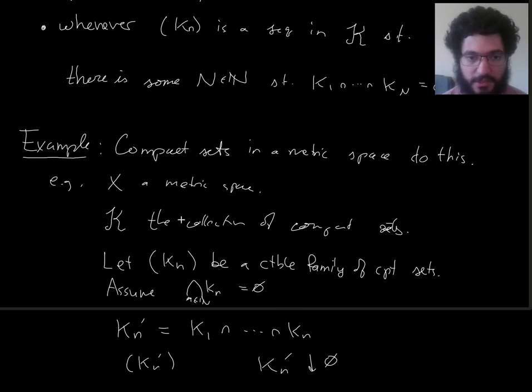It suffices to show that at least one of the kn primes is the empty set. So the question, is this a compact class, becomes equivalent here to the question: if I have a family of sets down arrowing to the empty set, and this family of sets is in k, then must one of them be empty? Or is it possible to have them all be non-empty and have them down arrow to the empty set?